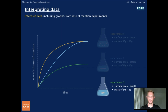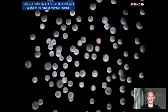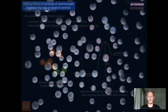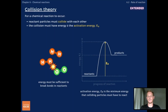That's everything you need to know for core, so we'll move on now to the extended section. Collision theory is a principle of chemistry that helps us to explain why reactions occur at different rates. According to the theory, reactant particles must collide if they're to react. In addition, the collision must have sufficient energy — that is, enough energy to break bonds in the reactants. As we learned in topic 5.1, the minimum energy that colliding particles must have is known as the activation energy.